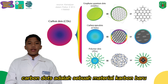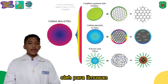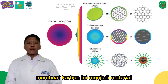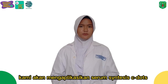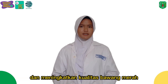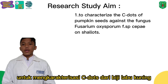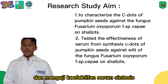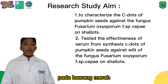Carbon dots is a new material that has a size below 10 nanometers. C-dots nanoparticles have been developed intensively by scientists and are still being developed today. The advantages they have make carbon dots a material with very wide application. From the existing problems, we will apply C-dots synthesis serum from pumpkin seeds to solve the Fusarium Oxysporum FSPC problem and improve the quality of shallots. Our research aims to characterize the C-dots of pumpkin seeds against the fungus Fusarium Oxysporum FSPC on shallots, and to test the effectiveness of serum from synthesized C-dots of pumpkin seeds against Fusarium Oxysporum FSPC on shallots.